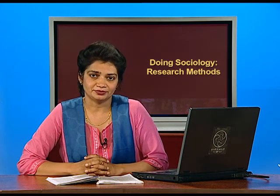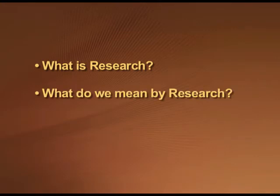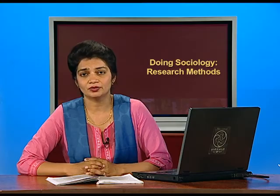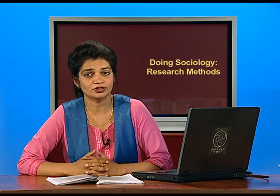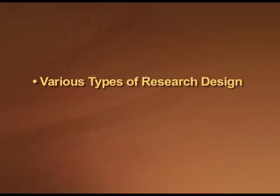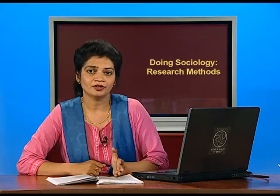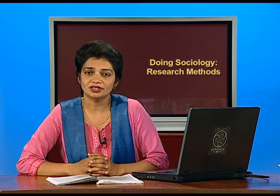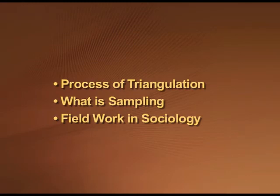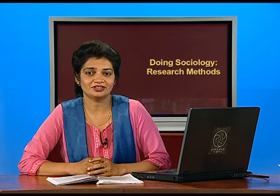To conclude, let us summarize this chapter across the eight parts we have discussed. We covered what research is and what we mean by it; the issues of objectivity and subjectivity in sociological research; how to decide on a topic of research; the difference between macro and micro sociology; various types of research designs and methods — primary, secondary, quantitative, qualitative and mixed methods; the advantages and disadvantages of these methods and the process of triangulation; sampling; field work in sociology; and the contributions of noted Indian sociologists. This is all about doing research in sociology. Enjoy reading this chapter. Thank you.